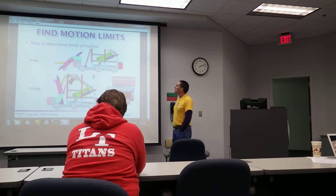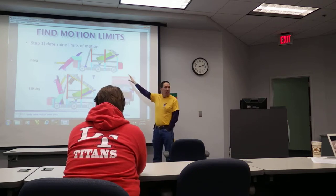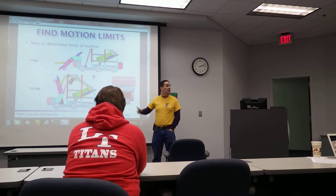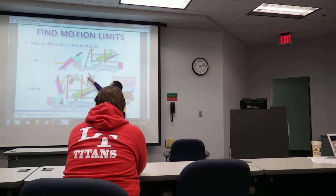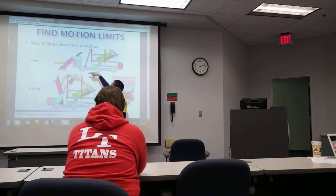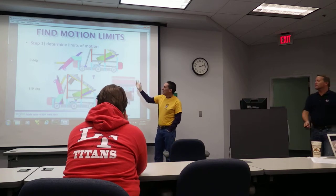What I wanted to show you is: once you've got your robot modeled — and this could even be done in 2D, it doesn't have to be 3D — you need to find out what your limits of motion are. In this particular case, we wanted this arm to come down so that the roller was sitting on the floor, which was at zero degrees. When the arm goes up, it needed to be within the frame perimeter, which was at 119 degrees.